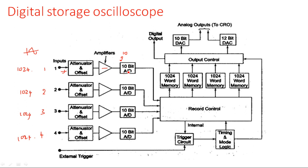All this digital data is stored into a recorder. The recorder records the analog signal converted into bits — ones and zeros. The record and control circuit records the data whenever the timing and mode logic is switched on. This happens because of the trigger circuit — whenever the trigger pulse is generated, timing and mode logic awakens the record control to start recording.